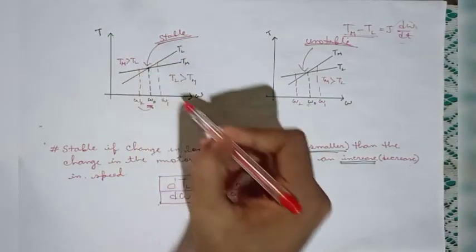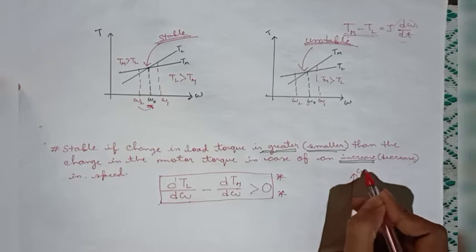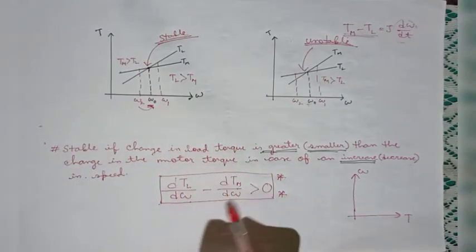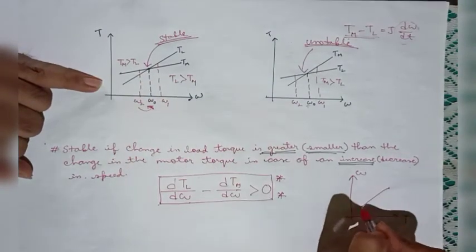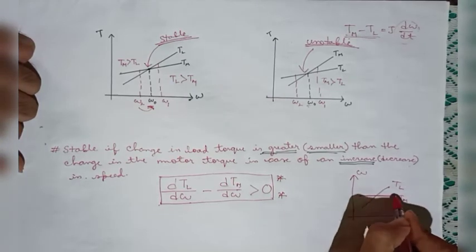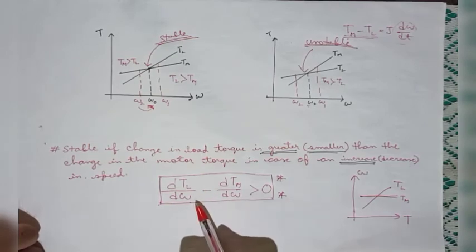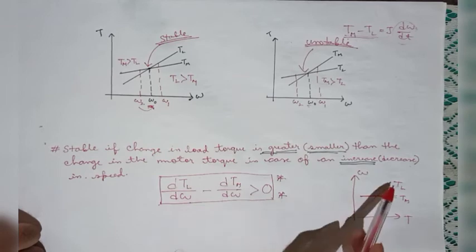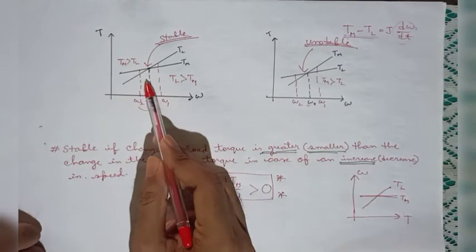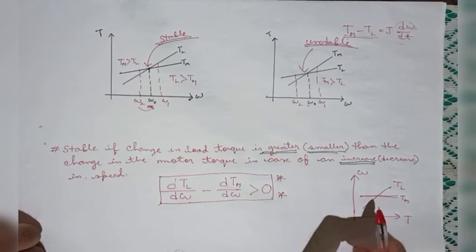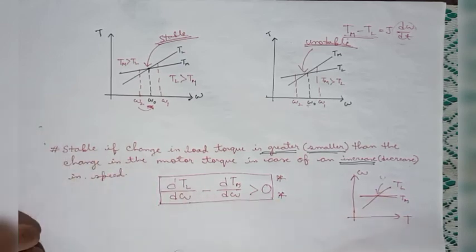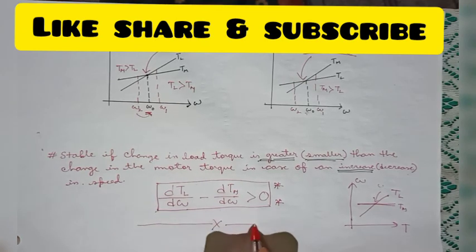In some questions the axes may be interchanged — the y-axis will have omega and the x-axis will have torque. In that case, be careful while applying this condition. Taking the same example with load torque and machine torque plotted this way, the rate of change of load torque with respect to omega is less than the rate of change of machine torque with respect to omega. Although it looks similar to the stable case, this equilibrium point will be unstable because it does not satisfy the condition dTl/dω > dTm/dω.